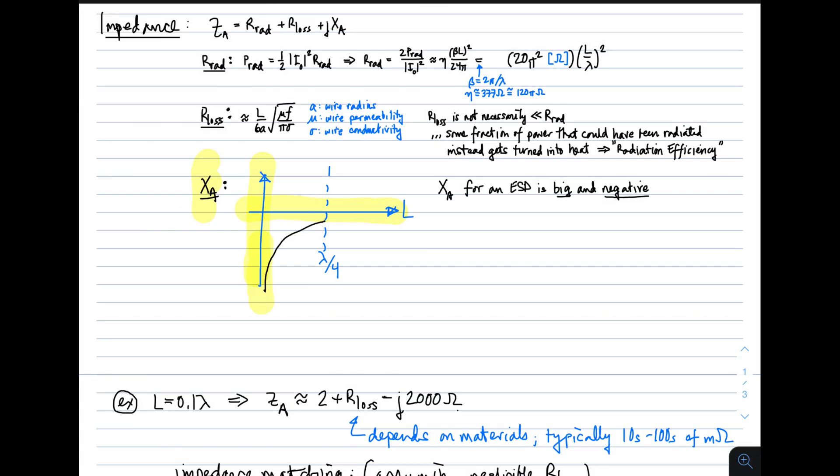If the antenna is very, very small, then what we find is that the reactants is very, very large and negative. Just think of an un-terminated transmission line. An un-terminated transmission line has a reactants of minus J infinity. It looks like a very small capacitor.